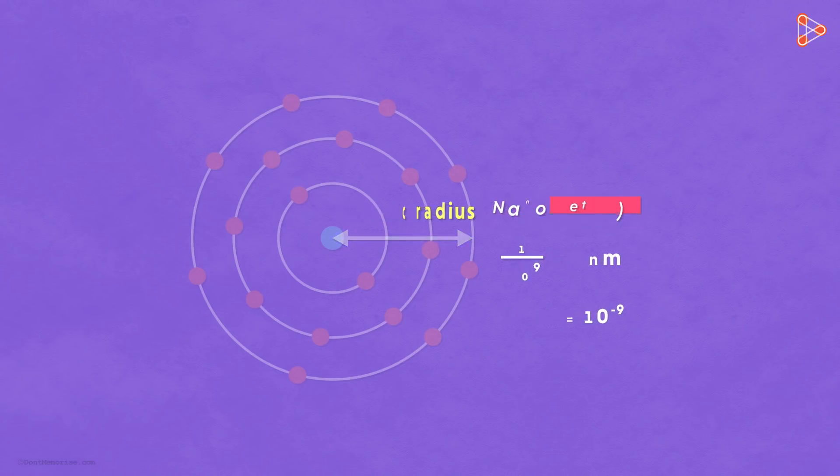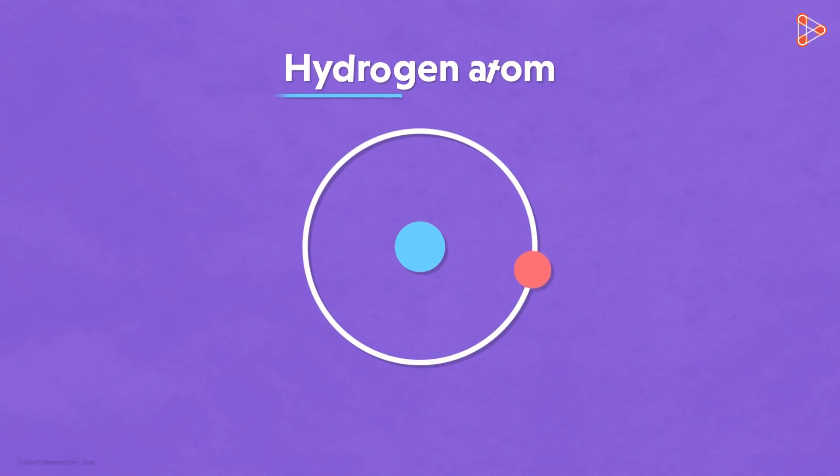Now let's take an example of a hydrogen atom. The atomic radius of a single isolated hydrogen atom is around 5 times 10 to the power negative 11. That's like 0.05 nanometers! Amazingly tiny!